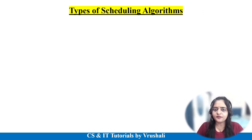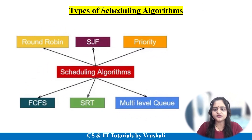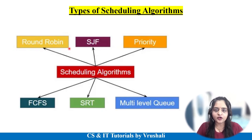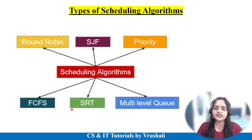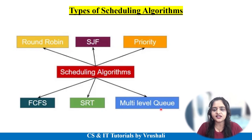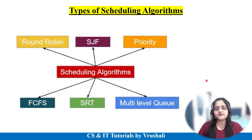In the operating system there are different types of scheduling algorithms: Round Robin, SJF (Shortest Job First), Priority algorithm, FCFS (First Come First Serve), SRT (Shortest Remaining Time First), and Multi-level Queue. In today's session we will solve an example of the FCFS algorithm. Every algorithm is used according to its characteristics and features.